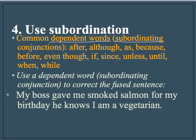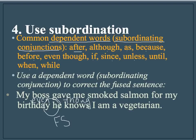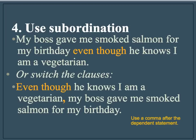To create subordination, use a dependent word or a subordinating conjunction. Here are some examples: after, although, as, because, before, even though, if, since, unless, until, when, and while — and there are several others. Let's use one of those dependent words to correct this fused sentence: My boss gave me smoked salmon for my birthday. He knows I am a vegetarian. Right there is our fused sentence. Let's fix it by inserting "even though" right there. My boss gave me smoked salmon for my birthday, even though he knows I am a vegetarian. Now we have fixed that fused sentence by inserting a dependent word and creating a dependent clause.